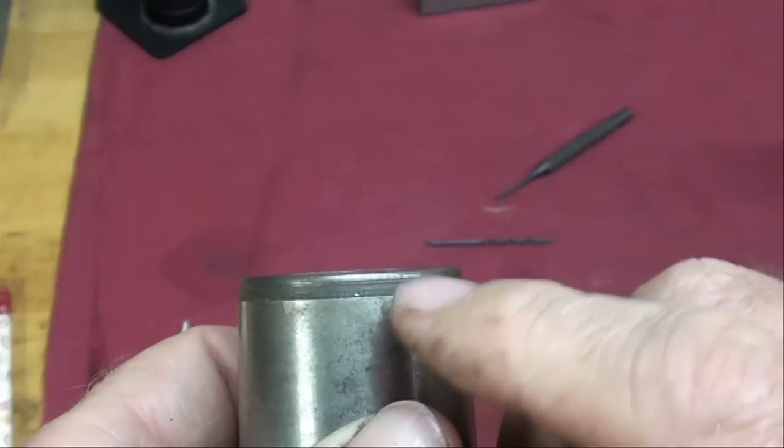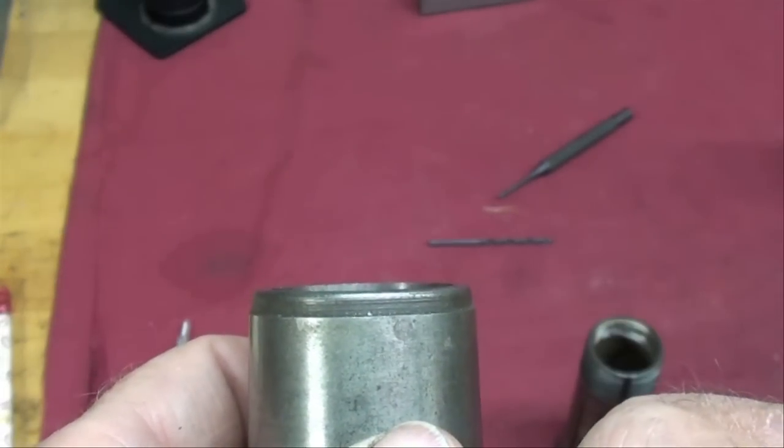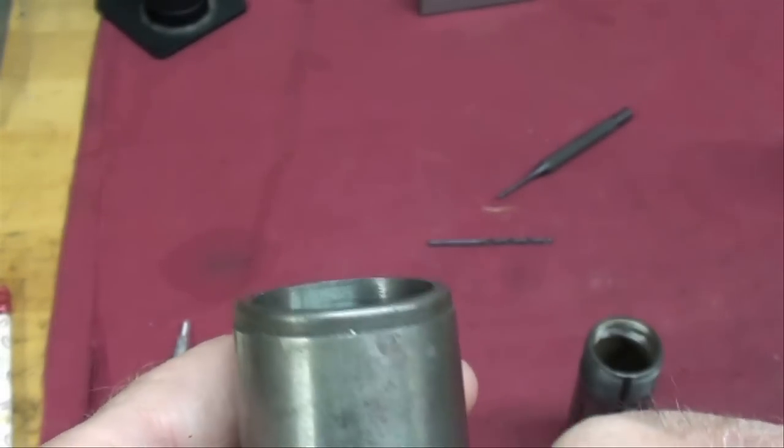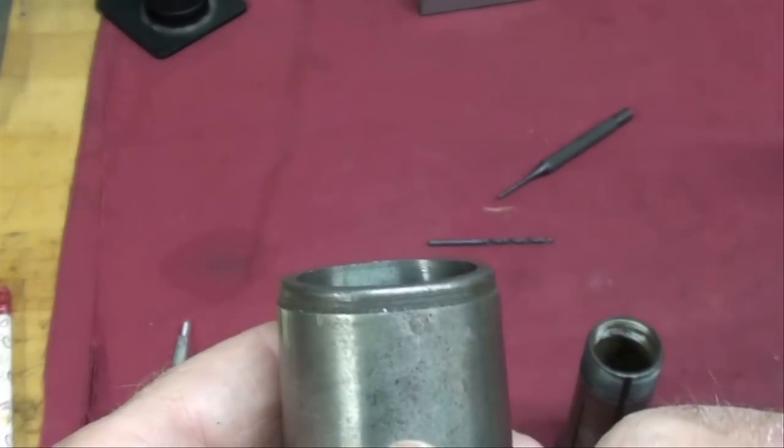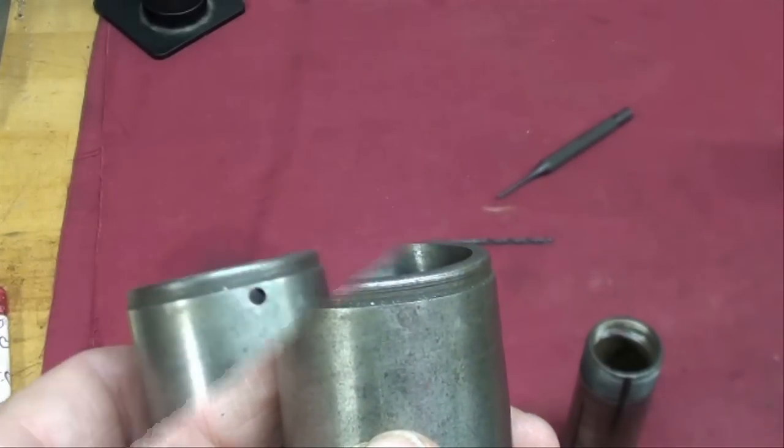So this little key is round on one end and square on the other, and the overall size of it is very small, very short. So let's take it out, see what we got left, and measure it.